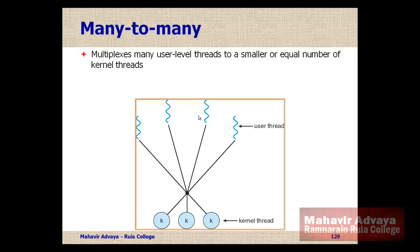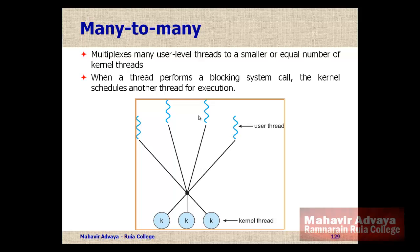One kernel thread may be handling more than one user thread, and even if one user thread makes a blocking call, the other user threads may be handed over to other kernel threads and execution continues. Scheduling of threads is done by the kernel, so if one user thread makes a blocking call, the remaining threads will be scheduled for other kernel threads. This is how the many-to-many model provides more concurrency than the previous two models.